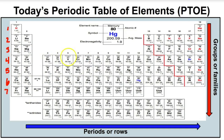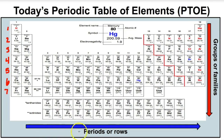Periods or rows are the horizontal rows on the periodic table, whereas groups or families are the vertical columns. For example, group one goes from hydrogen down to francium, group two from beryllium down to radium, then family three, four, group five, and so on all the way to group 18. They're called families because members of the same family have very similar physical characteristics — just like you might look like your cousin or brother. Elements in the same family on the periodic table have very similar physical and chemical properties.